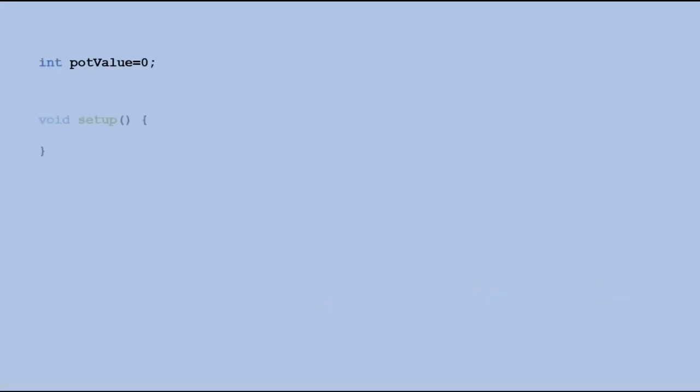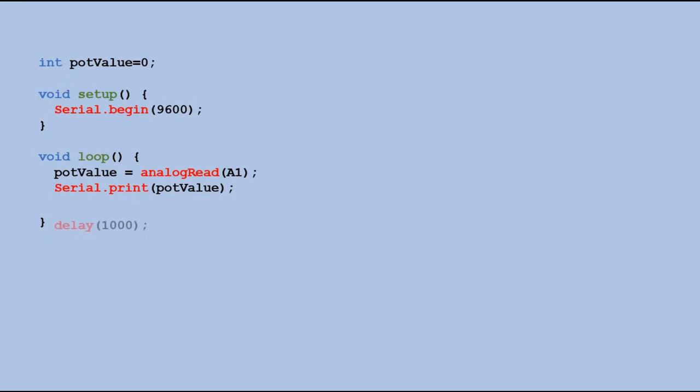Code would be very simple. In setup we open serial port and in loop we save a pot reading to a pot value variable and use print command to output it in serial monitor.